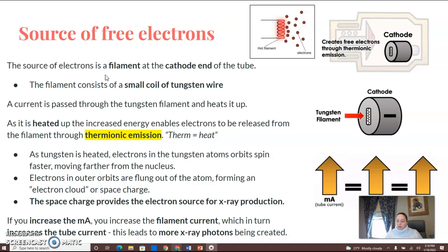This process is called thermionic emission. When you see the word 'therm,' it means heat. As the tungsten is heated, electrons in the tungsten atoms spin faster, moving farther from the nucleus. The electrons in the outer orbits are flung out of the atom, forming an electron cloud or space charge. That space charge provides the electron source for X-ray production.